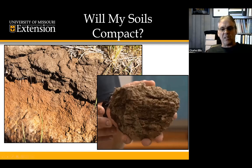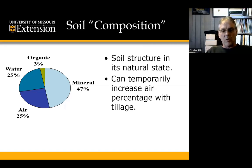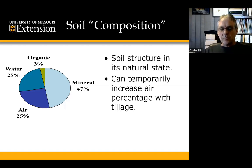Soil compaction will happen — where we get into mights and maybes is what the outcome is from that compaction. When we look at soil composition in its natural state, it's typically about 43% mineral, with about 25% air and 25% water, and about 3% organic matter — for my part of the country, Missouri soils will be in that area. We can temporarily increase that percentage with tillage, doing that artificial fluffiness, but over time it's going to come back to that equilibrium.